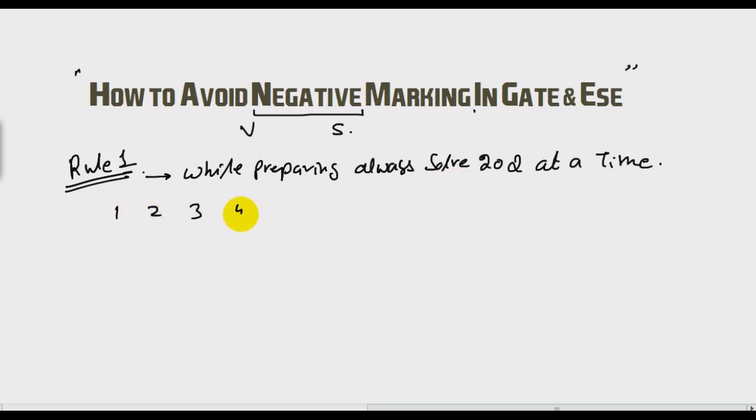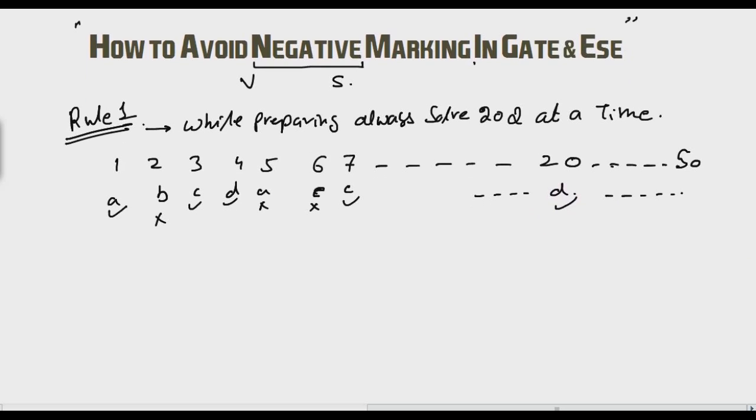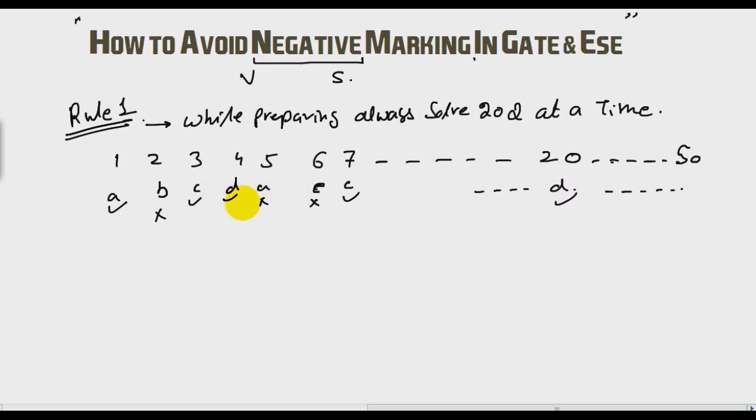So what you need: write 1, 2, 3, 4, 5, 6, 7 up to 20, then solve all those questions, whatever the options are, then check your answer. This is the first rule. While preparing, never do one question at a time, always 20 or more. The more you do, the better it is. Initially start with 20, and then at the final stage you can reach up to 50.